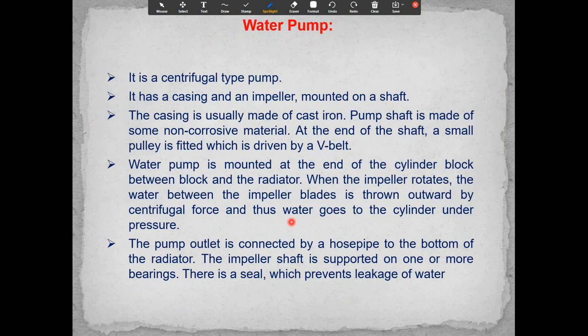The water pump is a centrifugal type pump with a casing and impeller mounted on a shaft. The casing is usually made of cast iron, and the pump shaft is made of non-corrosive material. A small pulley is fitted at the end of the shaft, driven by a V-belt. The water pump is mounted between the cylinder block and radiator. When the impeller rotates, water is thrown outward by centrifugal force and delivered to the cylinder under pressure. The pump outlet is connected by a hose pipe to the bottom of the radiator. A seal prevents water leakage.